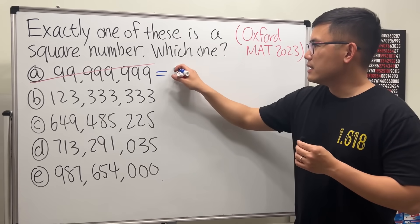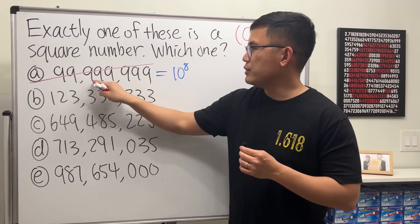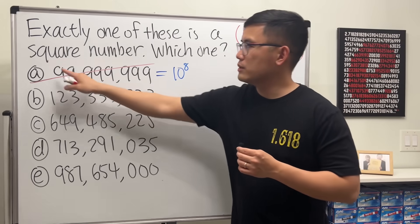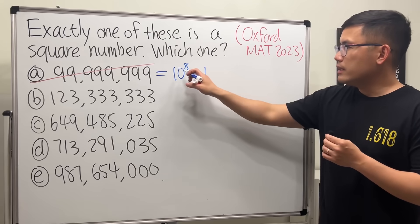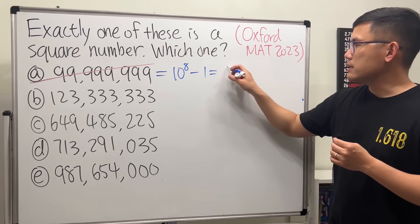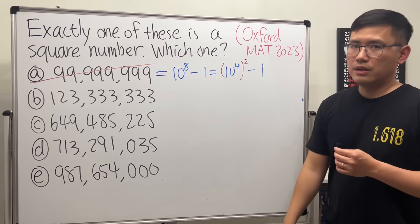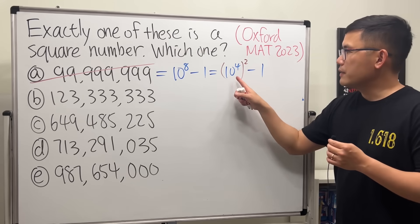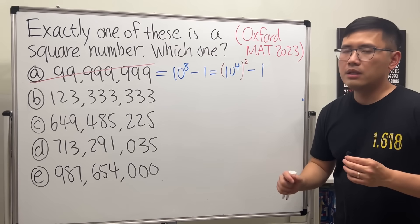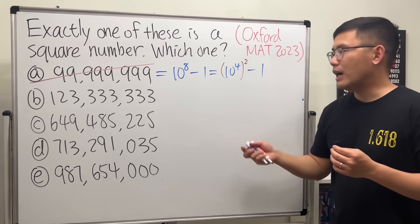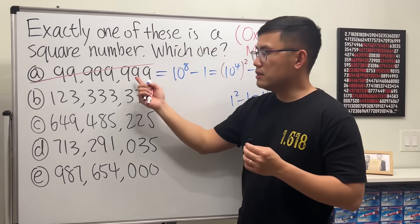So we can write this as 10 to the eighth power, right? Because you have one, two, three, four, five, six, seven, eight—eight zeros. So 100 million minus one. And 10 to the eighth power is 10 to the fourth and then to the second, and then minus one. Whenever we have a perfect square like this and then minus one, the result cannot be a perfect square—unless you have one squared minus one which is zero, but certainly this is not zero. So option A, not possible.